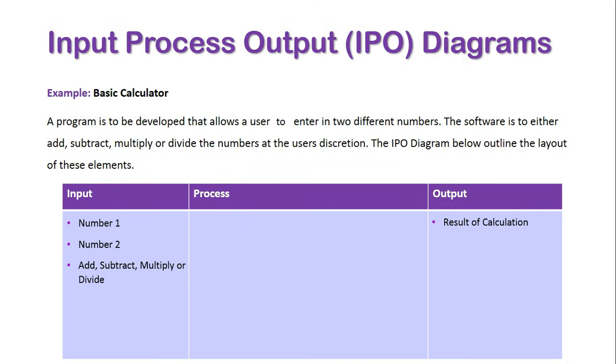And at the user's discretion to add, subtract, multiply, or divide. Now that I know what's going into the system and what's coming out, what do I need to do in the middle to turn this input into the output?